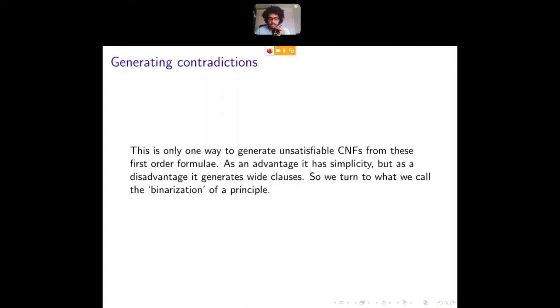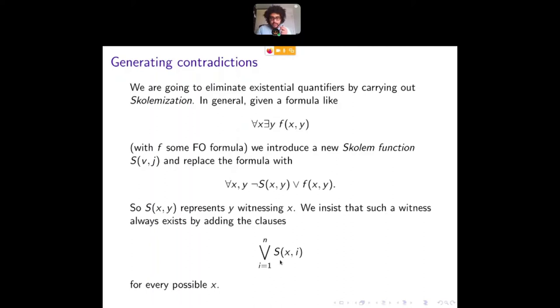Another reason is that this method generates some wide clauses. We have this very big disjunction here over the entire domain. And usually that's fine. But we may be, you know, we have to pick our complexity measure. And some people are interested in the width of a clause that a proof system has to move through in order to refute something. So if we already start off with very wide clauses, then there's not a lot we can do. So there are other ways to eliminate wide clauses, but you could just choose a different method of generating a CNF, which is what we're going to look at. So called binary version.